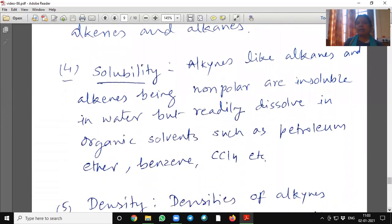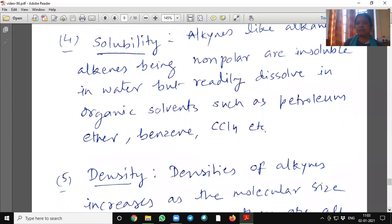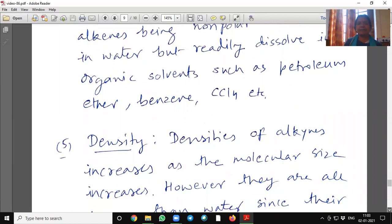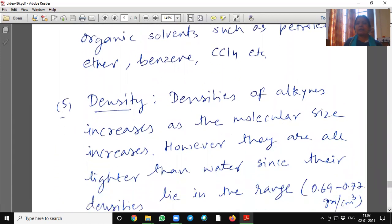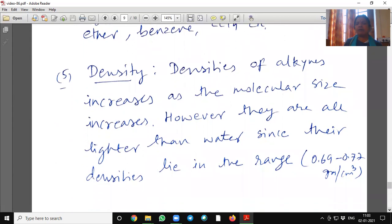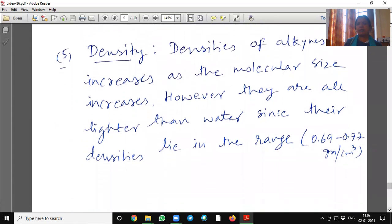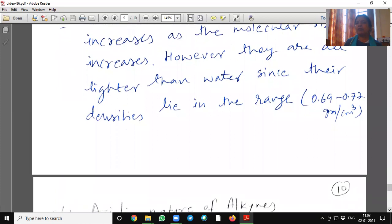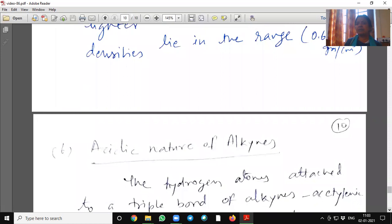Solubility. Alkynes like alkenes and alkanes being nonpolar are insoluble in water, but readily dissolve in organic solvents such as petroleum ether, benzene, carbon tetrachloride, etc. Densities of alkynes increases as the molecular size increases. However, they are all lighter than water since their densities lie in the range of 0.69 to 0.77 grams per centimeter cube.